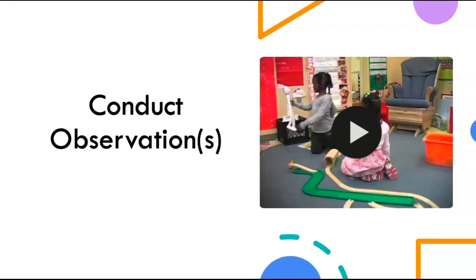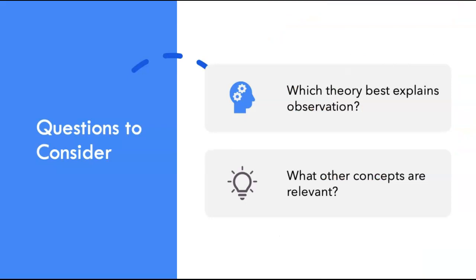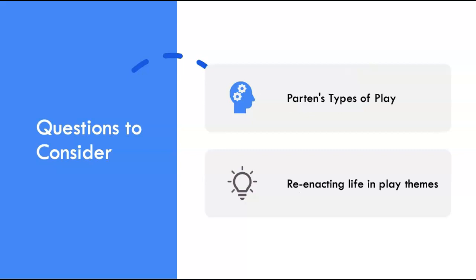After you watch the video observation, some questions you might have are: which theory best explains the observation, and what other concepts might be relevant here? Based on the child observation, Parten's types of play is a relevant theory. In this case, we see the children engaging in collaborative play in which they share the toys and also have a shared goal — in this case, the shared goal is to create a train track, putting all the pieces together to create that track.